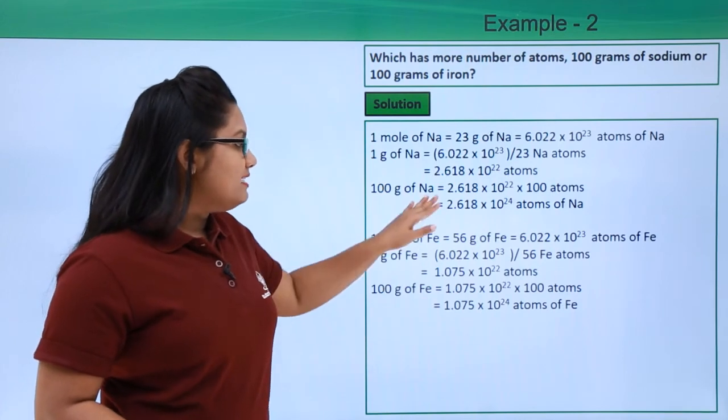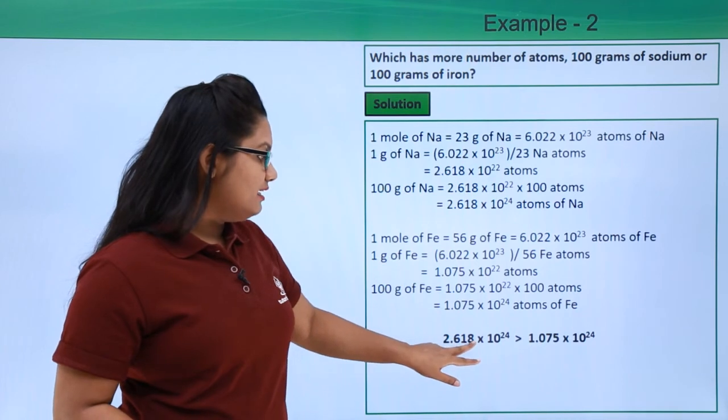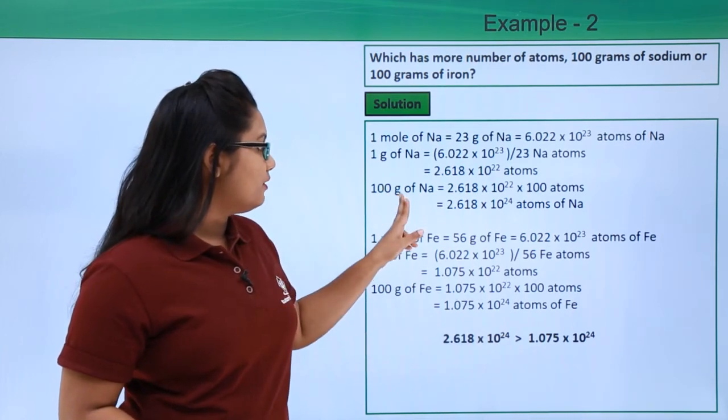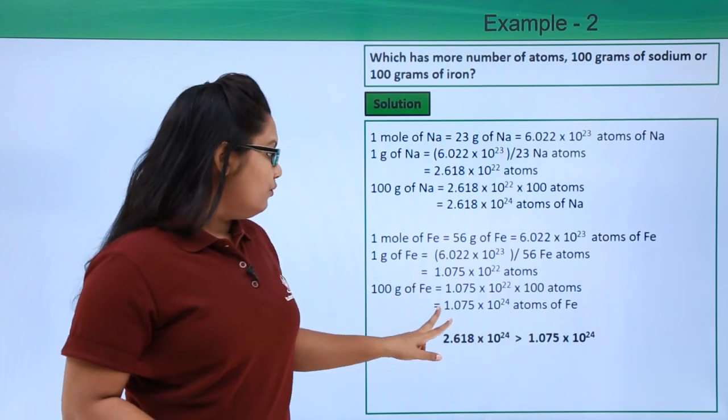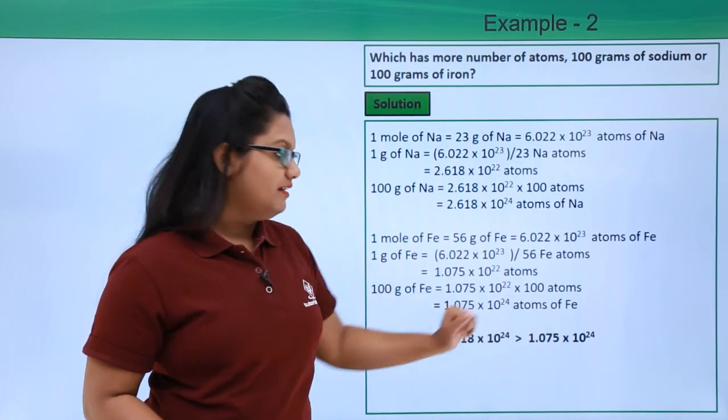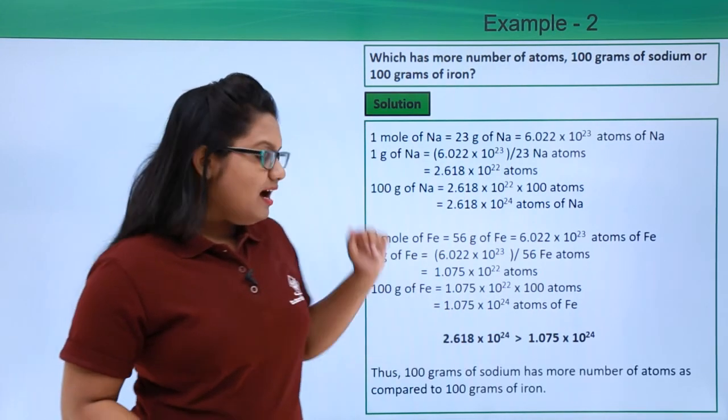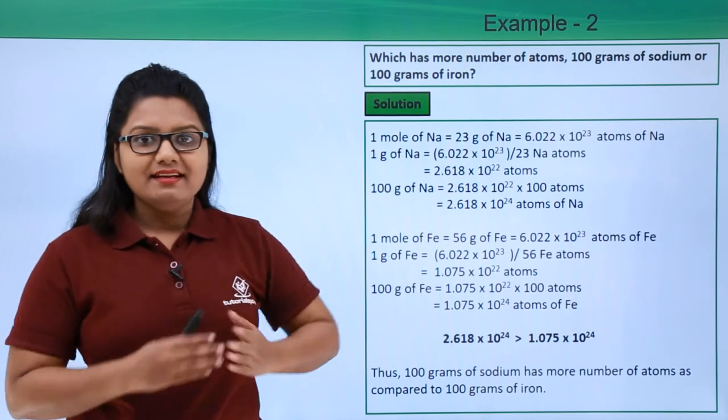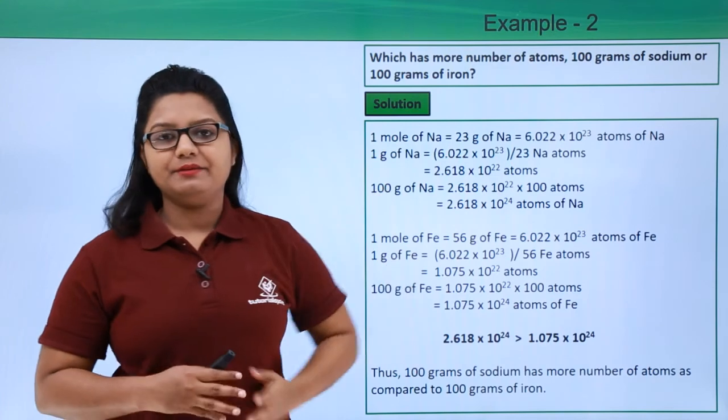Now by checking out these two numbers, we find that 2.618 × 10^24, which is the number of atoms in 100 grams of sodium, is greater than 1.075 × 10^24 atoms of iron. So that's the answer. Thus, 100 grams of sodium has larger number of atoms compared to 100 grams of iron.